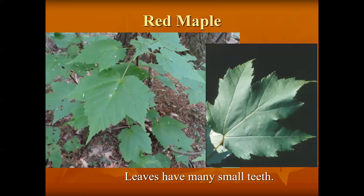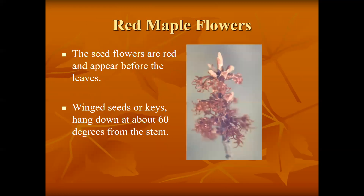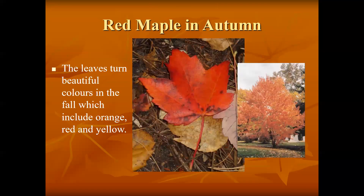All maples have some sugar, but maples not listed here don't have enough to make it worthwhile to collect the sap. Red maple has many teeth along the edges. Its fall color is usually bright red, and the stems are also red. Flowers often appear early and look red — it's a beautiful tree, second only to the sugar maple.